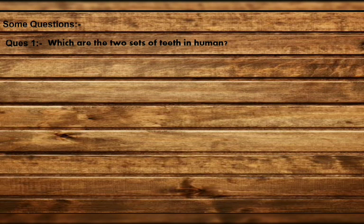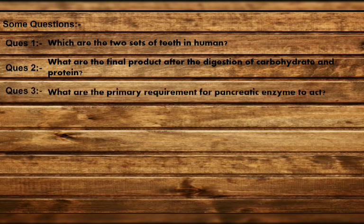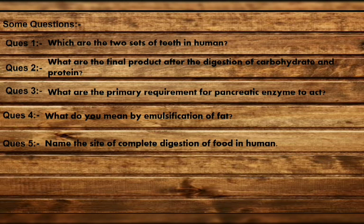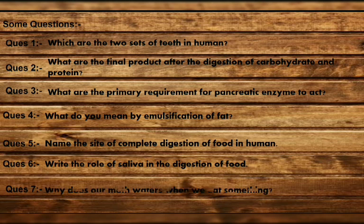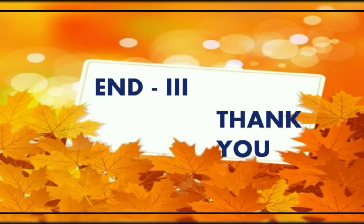Now some questions: number one — what are the two sets of teeth in humans? Next — what are the final products after the digestion of carbohydrate and protein? Next — what are the primary requirements of pancreatic enzyme to act? Next — what do you mean by emulsification of fat? Number five — name the site of complete digestion of food in humans. Finally — write the role of saliva in digestion of food, and why does our mouth water when we eat something? This is the end of part three. Thank you.